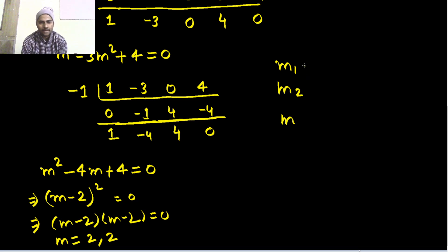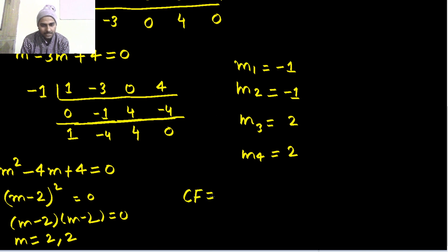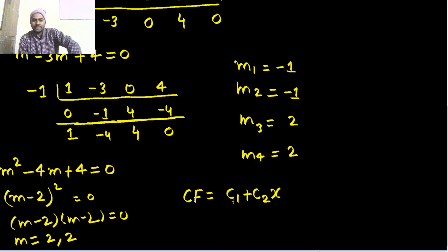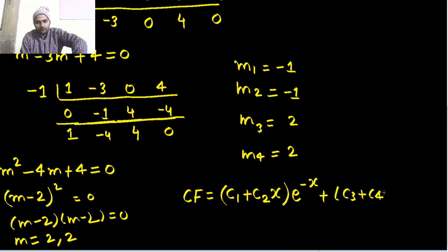So the roots are repeating in pairs: m₁ is minus 1, m₂ is also minus 1, m₃ is 2, and m₄ is also 2. When roots repeat, we write our complementary function like this: c₁ plus c₂x for the repeating minus 1 part. If minus 1 had repeated three times we would have written c₁ plus c₂x plus c₃x squared, but it only repeats twice. So with e power minus x, it is c₁ plus c₂x times e power minus x.